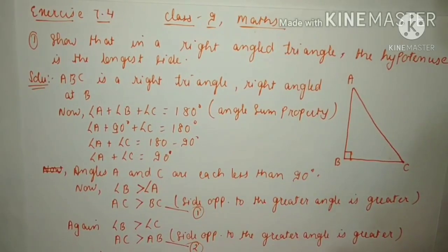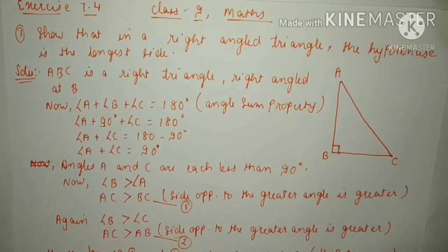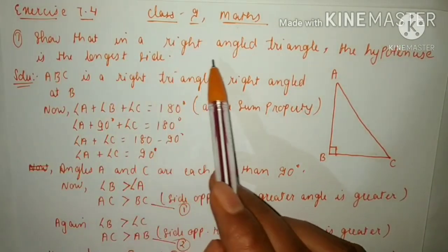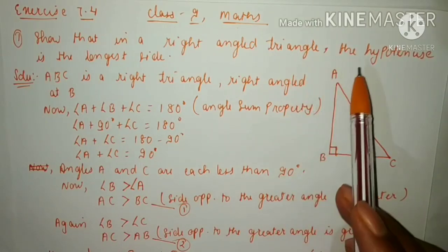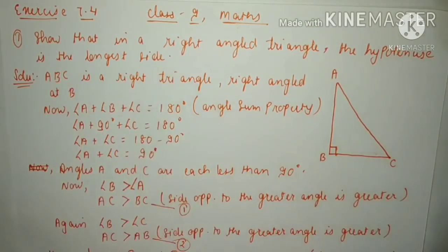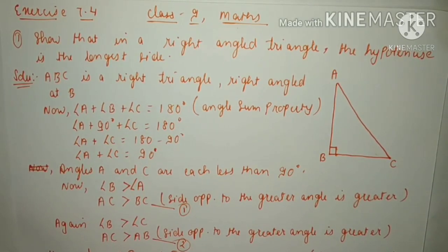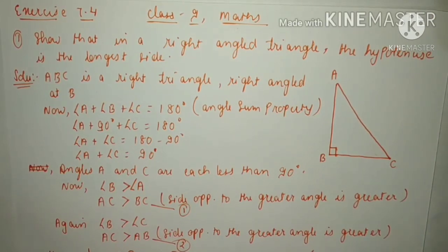Now see the first question of our exercise 7.4: Show that in a right angled triangle the hypotenuse is the longest side. In this we have to prove that the hypotenuse is the longest side of a right angled triangle. For this question, first we will draw a diagram of a right angled triangle.